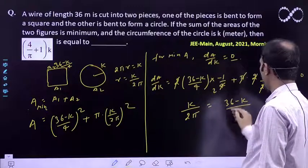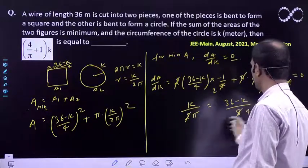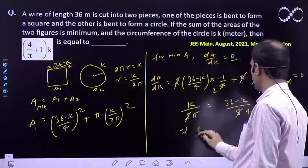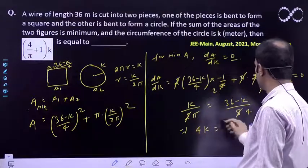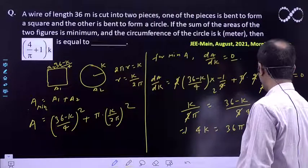This becomes 4. So 4k equals 36π minus πk.